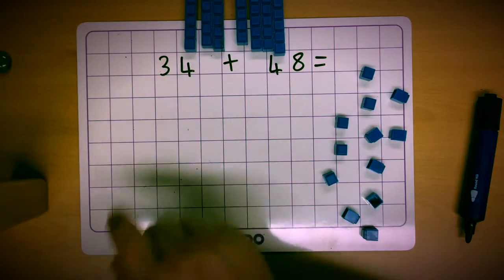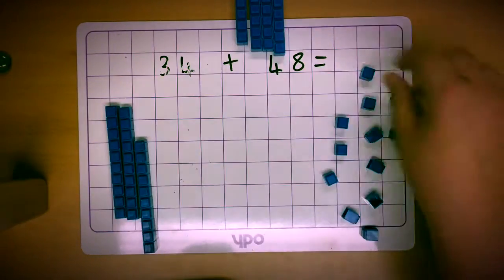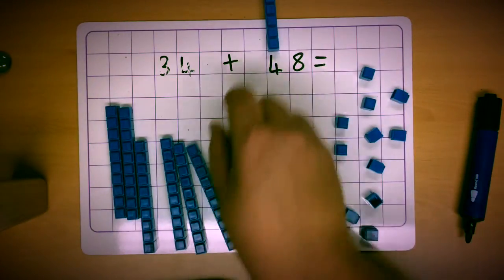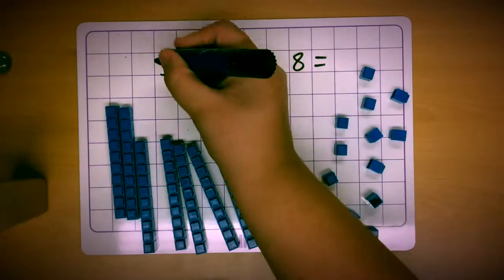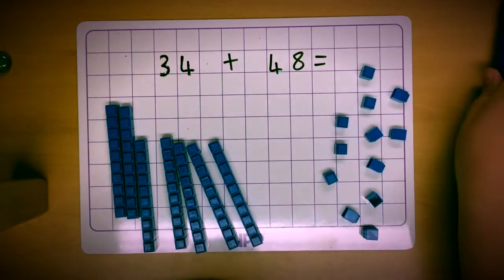They'll begin by counting the ten sticks. 10, 20, 30, 40, 50, 60, 70. So they're aware now that their number is going to be 70 or bigger.